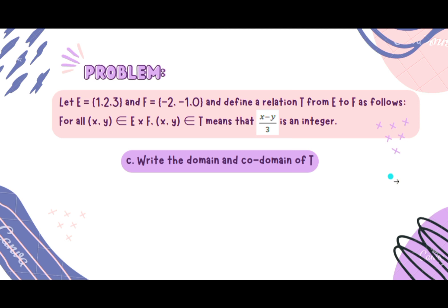Next, letter C: Write the domain and co-domain of T. We have our domain here, the set {1, 2, 3}, and our co-domain, the set {-2, -1, 0}.